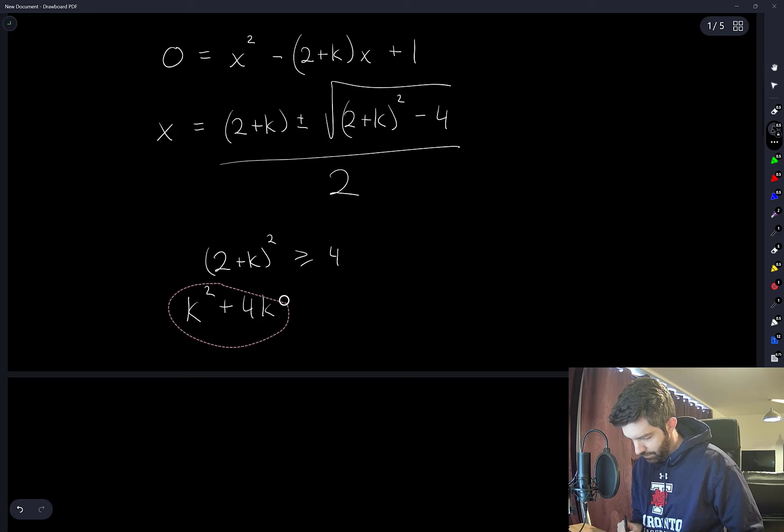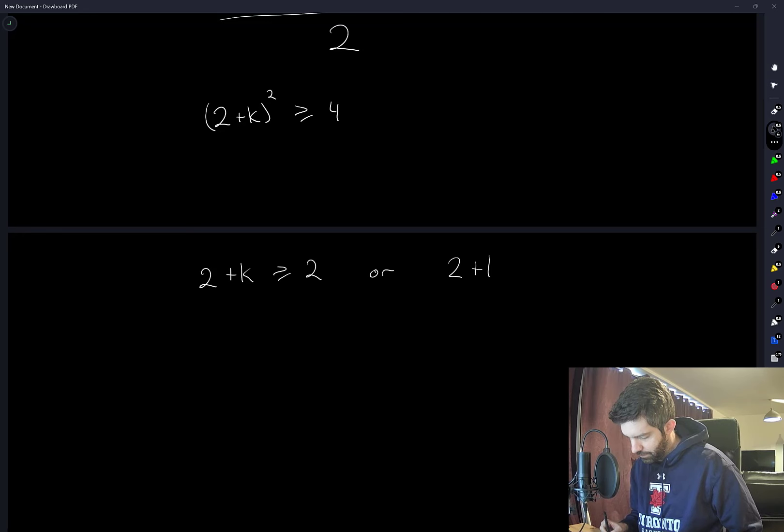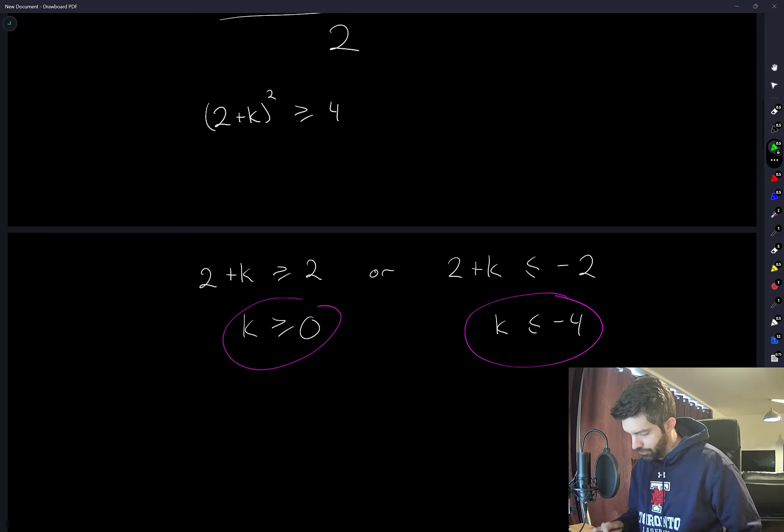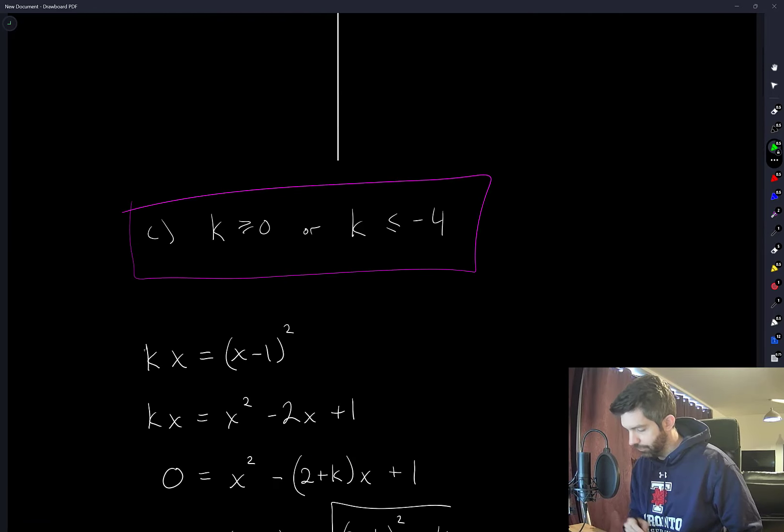So we need 2 plus k squared greater than or equal to 4. Let's take square roots of both sides. So we have 2 plus k greater than or equal to 2, or 2 plus k less than or equal to negative 2. This first inequality gives us k greater than or equal to 0, and the second one gives us k less than or equal to negative 4. And those are the two inequalities we needed for option C.